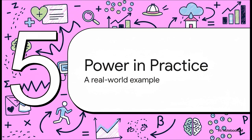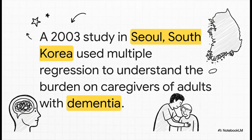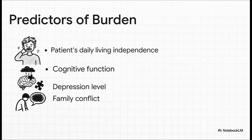Let's see how this incredible tool actually gets put to work in a real-world health study. Let's look at a study from 2003 in Seoul, South Korea. Researchers wanted to understand something really complex and human: the amount of stress and burden felt by people who are caring for elderly family members with dementia. They used multiple regression to hunt for the key factors — things like the patient's independence and cognitive function, but also factors related to the caregiver, like their own level of depression and the amount of conflict within the family. They wanted to know which of these clues had the biggest impact on caregivers' stress.